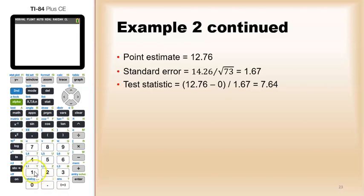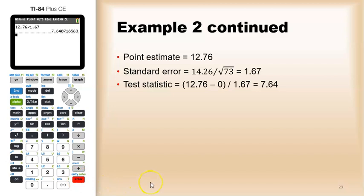So, we can actually repeat that, 12.76 divided by 1.67, and there you go. You get a test statistic of 7.64.